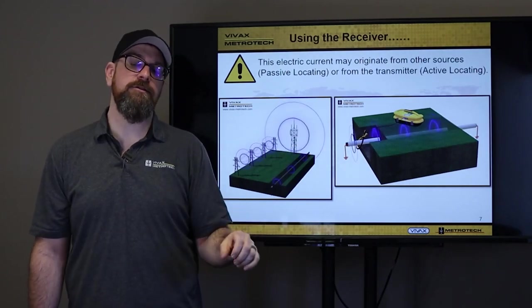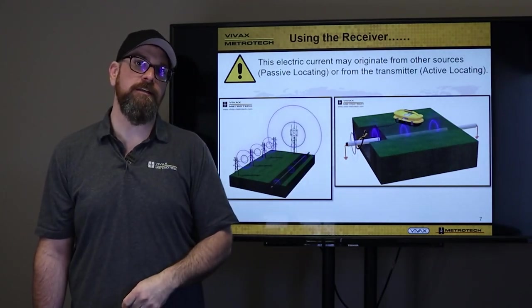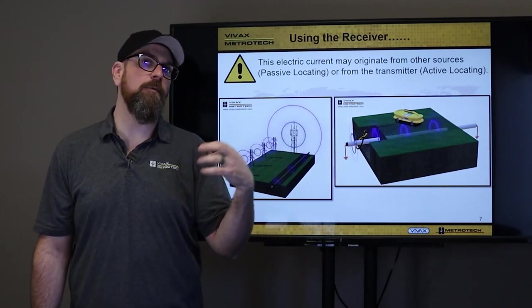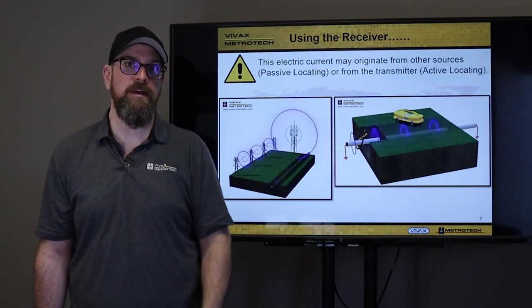An active way of locating is how we're putting it on with our actual transmitter, either using a signal clamp, or induction, or direct connection, which is our preferred method.